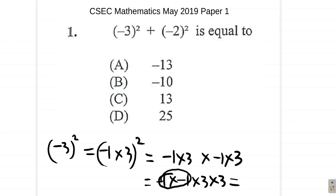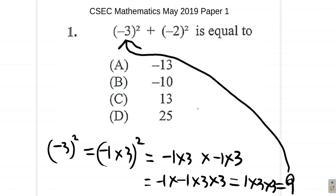Negative 1 times negative 1 gives you positive 1. So, it's 1 times 3 times 3, which is 9. So, that's that. You see that?